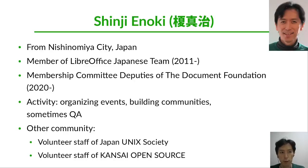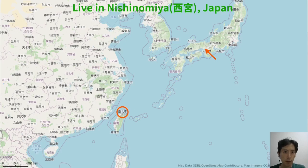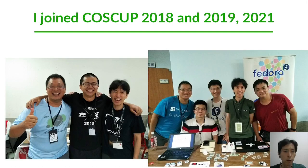My activity is mostly LibreOffice Japanese team and membership committee activities of the Document Foundation, organizing events, building committees, and sometimes QA. Other committees include Japan Unix Society and Kansai Open Source. I am living in Nishinomiya, which is between Osaka and Kobe. I have joined COSCUP three times, and this year is the fourth time.